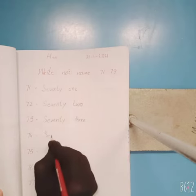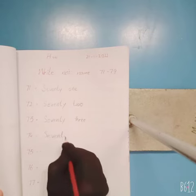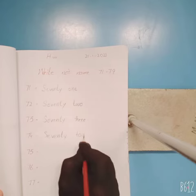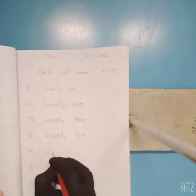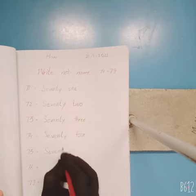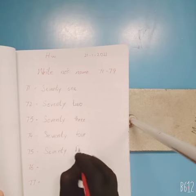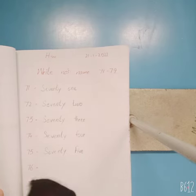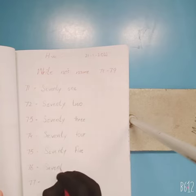74: S-E-V-E-N-T-Y, seventy, F-O-U-R, four — seventy-four, 74. And 75: S-E-V-E-N-T-Y, seventy, F-I-V-E, five — seventy-five, 75.